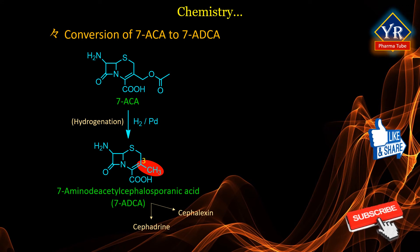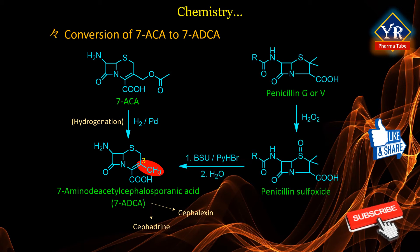A different approach to 7-ADCA is by ring expansion of the penicillin structure. This is achieved by first oxidizing penicillin G or V to its sulfoxide, followed by a ring expansion rearrangement whereby one of the two methyl groups inserts into the thiazolidine ring, resulting in the thiazine ring. The process is catalyzed by pyridine hydrobromide on the silyl-protected penicillin sulfoxide. Hydrolysis of the silyl ester yields 7-ADCA.